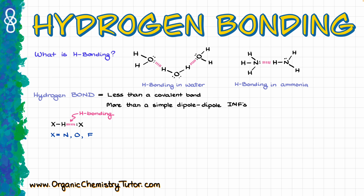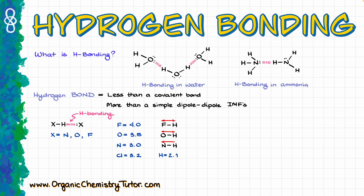Although some other elements could potentially participate in hydrogen bonding to a smaller extent, we typically only focus on nitrogen, oxygen, and fluorine. The first reason is electronegativity — fluorine, oxygen, and nitrogen are among the three most electronegative elements. Because of their extremely high electronegativity, bonds with hydrogen are extremely polarized, putting a significant delta-plus charge on the hydrogen atom, which is absolutely crucial for hydrogen bonding.